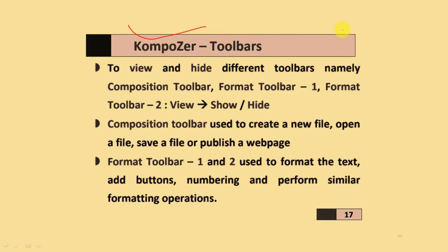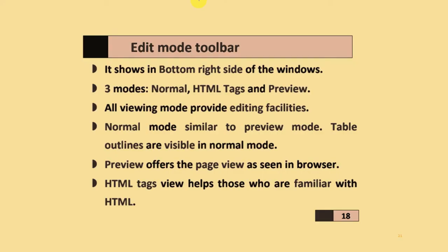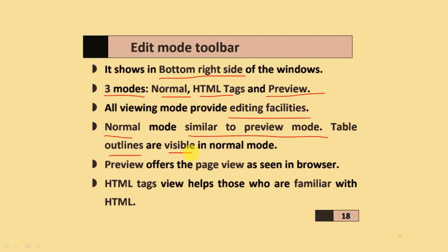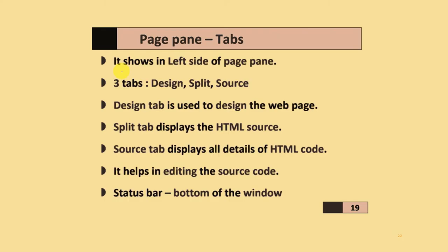The different toolbars in Composer are the Composition toolbar, Formatting Toolbar One, and Formatting Toolbar Two. The Composition toolbar is used to create a new file, open a file, save a file, or publish a web page. Format Toolbar One and Two are used to format different types of text, add bullets, numbering, and perform similar formatting options. The Edit toolbar shows buttons for the window and has three modes: Normal mode, HTML Tags view, and Preview mode. In Normal mode, table outlines are visible. Preview mode shows the page as seen in a web browser. HTML Tags view helps those familiar with HTML.